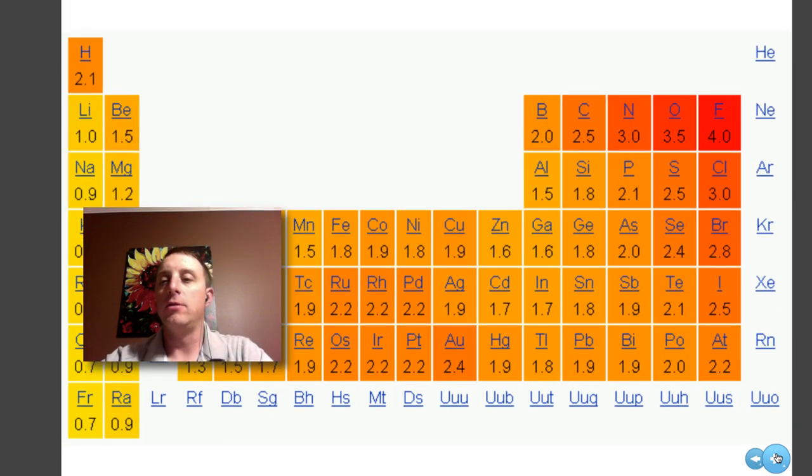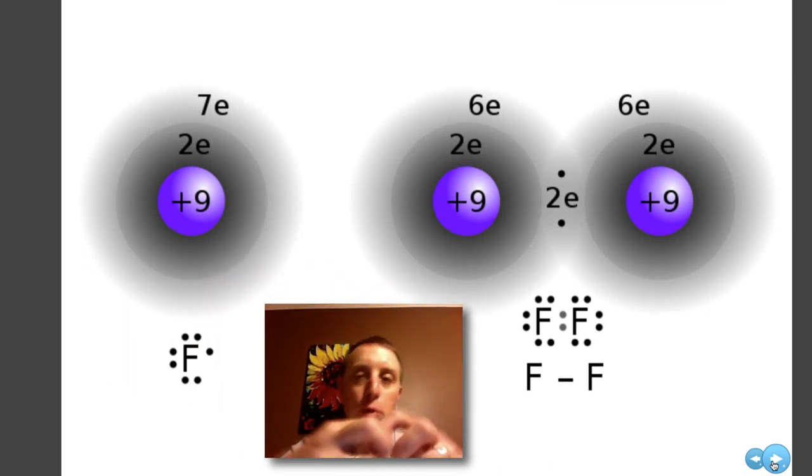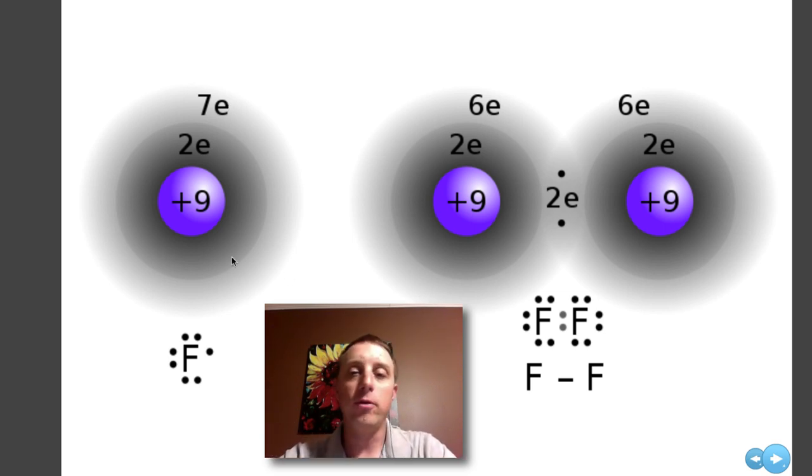What if you have electronegativities that are very similar or even exactly the same? Going back to our example of fluorine, fluorine is a diatomic molecule. Two fluorine atoms will form a bond with each other. Obviously, since the electronegativities are the same, one fluorine atom will not pull the electron from the other. So they will share their electrons. Fluorine has seven electrons in its outermost shell. To be stable, that should be full, so it wants eight. The two fluorine atoms come together and share their electrons in this outermost shell. This sharing of electrons is what we call a covalent bond. It's a very strong bond. It's very hard to get these two atoms to come apart.